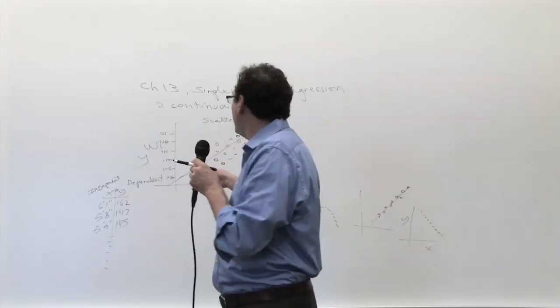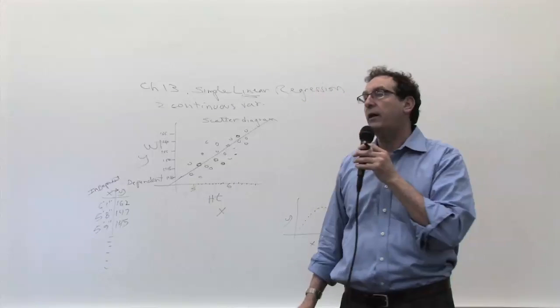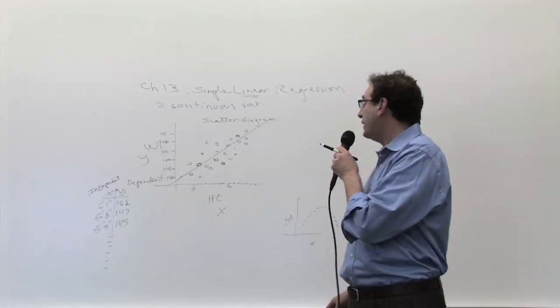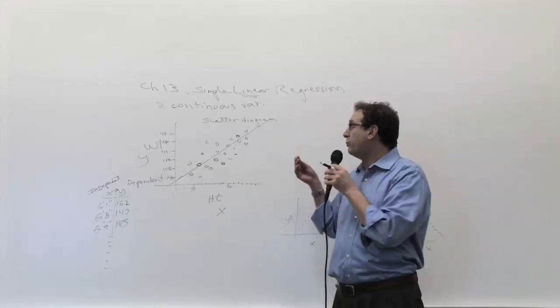if you didn't have a formula, you would take a ruler and literally play around with it to figure out which is the best possible straight line that fits the data. Now, of course, we have to be more precise about it. How do you define the best possible straight line? You need to have a precise definition.